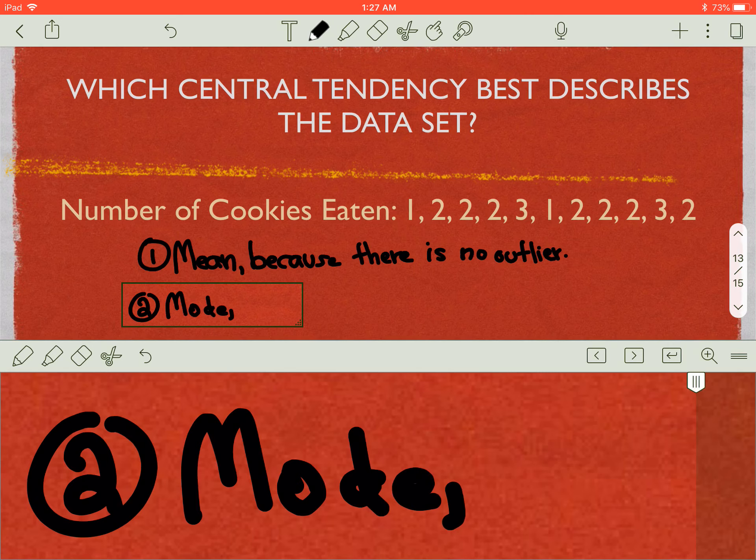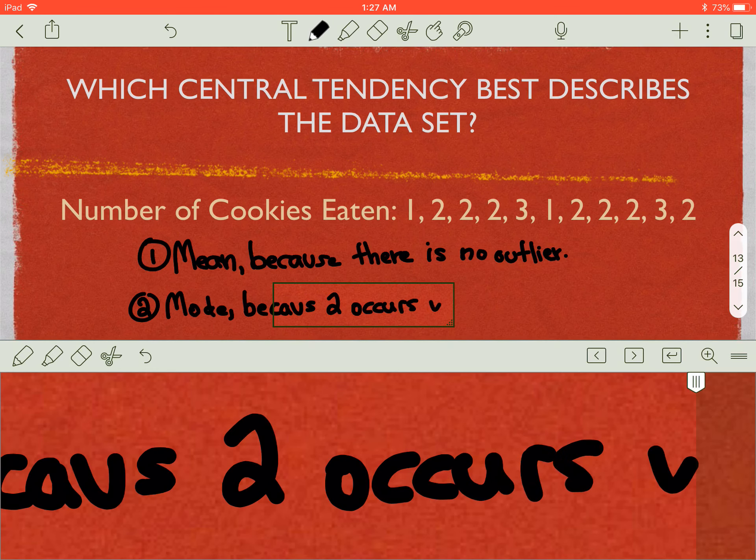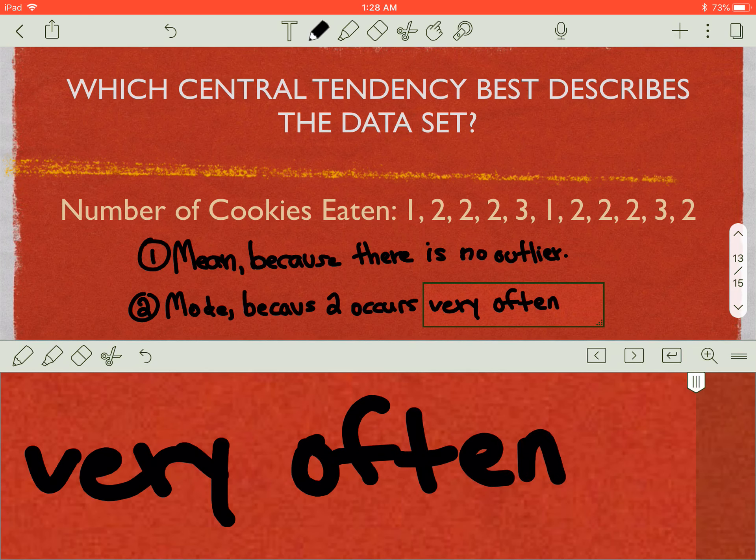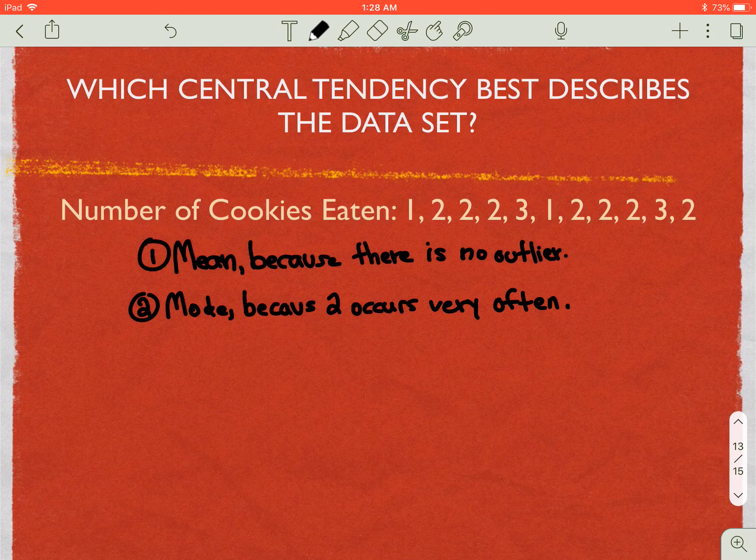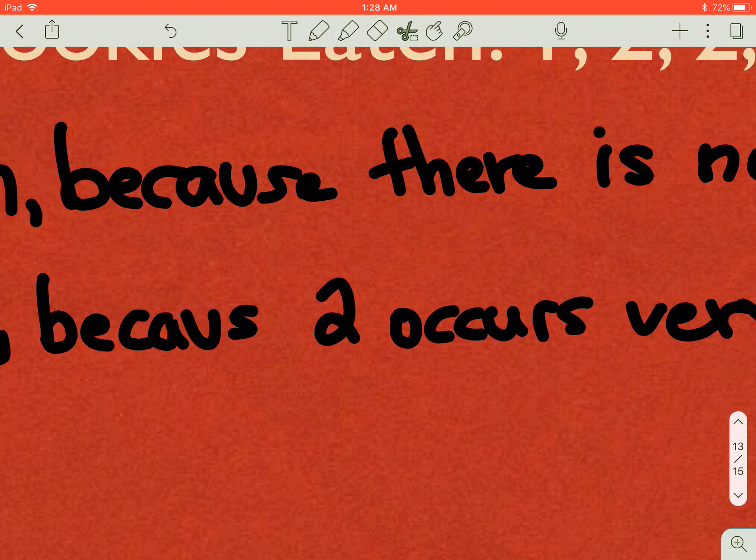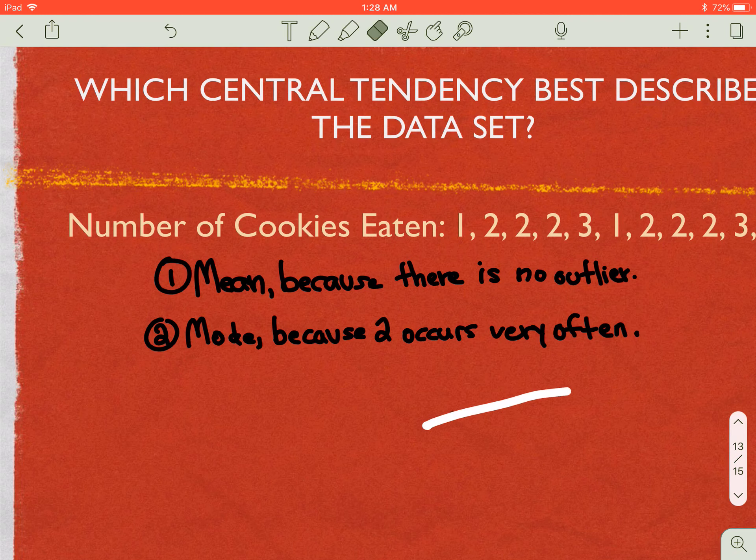Or the other option would be mode. Mode because I have a number that repeats a lot. I would say mode because two occurs very often or repeats a lot or is repeated a lot in the data set. Both of those would be right answers. I forgot the E in because, again, what is wrong with me? Don't answer that. There we go. So both of those would be right answers for that one right there. All right.